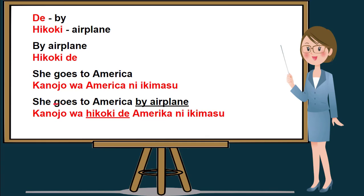She is kanojo wa, followed by by airplane, which is hikokide, and goes to America, America ni ikimas. So if we translate she goes to America by airplane, it will be kanojo wa hikokide America ni ikimas. Please follow after me: kanojo wa hikokide, America ni ikimas. Which means she goes to America by airplane.